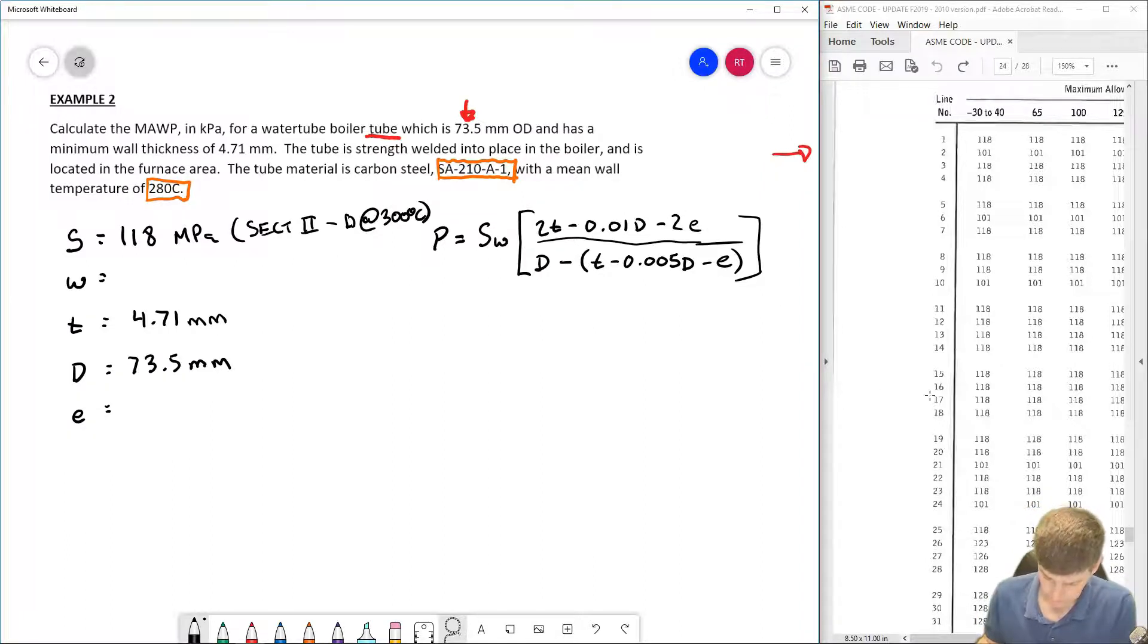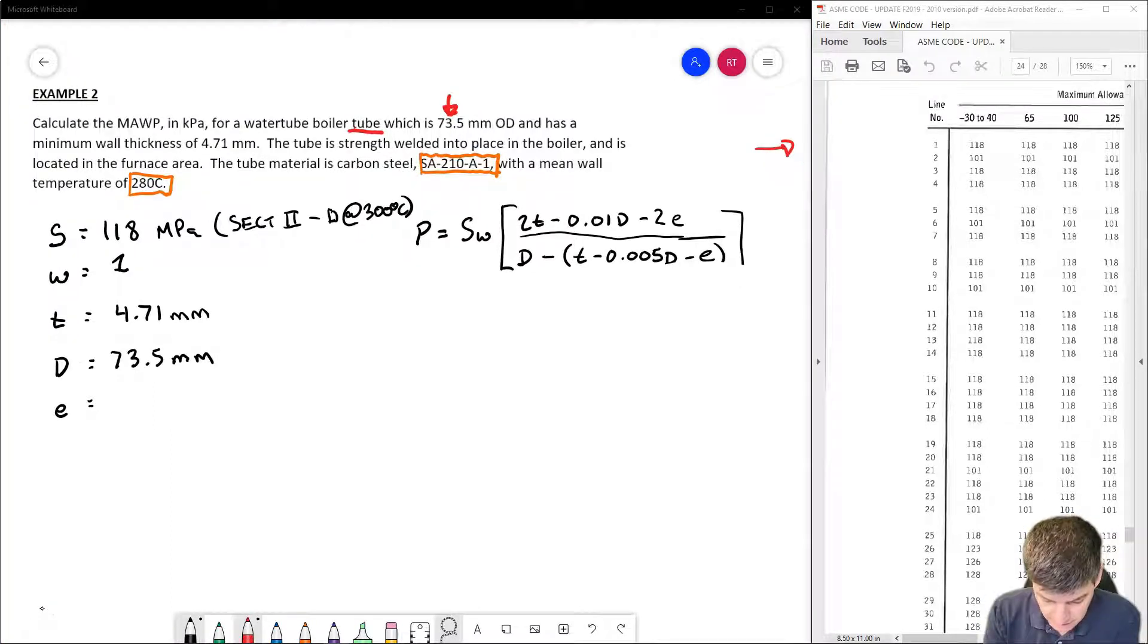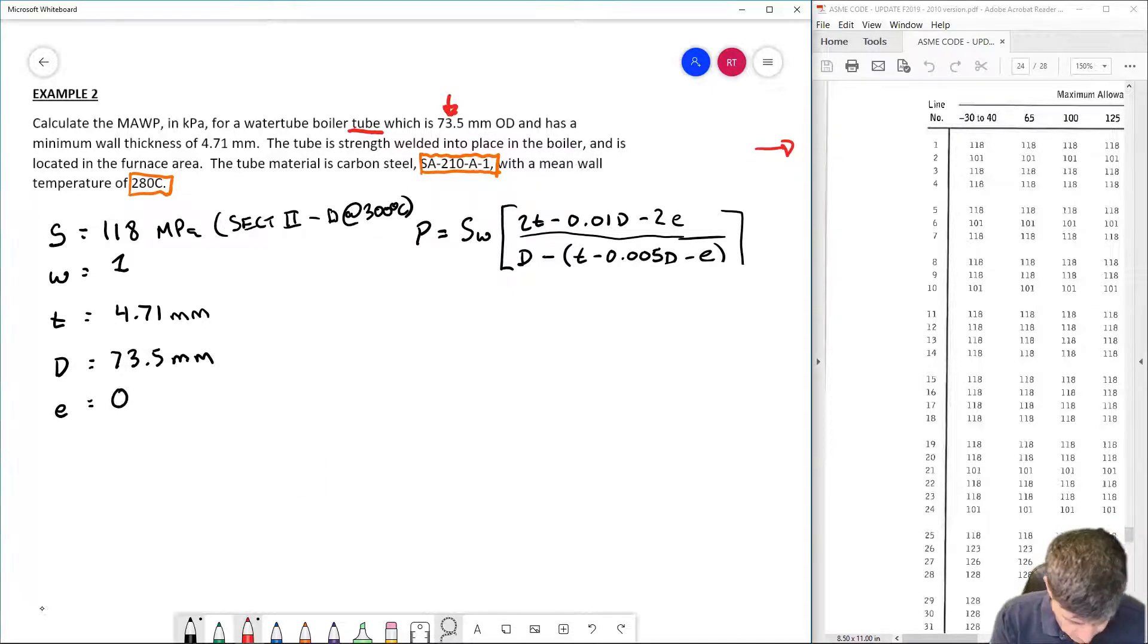Similar situation - we have a low temperature for our mean wall, well below the 500-ish degrees that would be required if we had one of those creep reduction factors. So that meant that W, similar to the last section, is going to be equal to 1. And in addition, because E is a strength welded tube, E is going to be equal to 0.